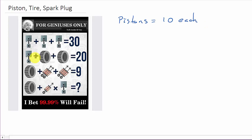And now we know that the pistons are 10, so that means this right here, I'm going to do that in a different color, we know this is 10, and so that means the two tires have to add up to 10. So if we have two tires that add up to 10, that means each tire is 5 each.